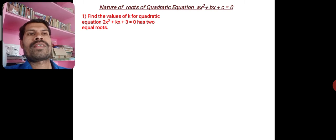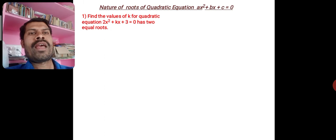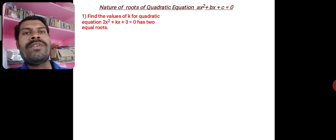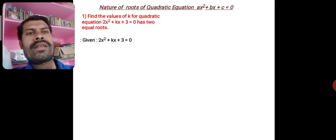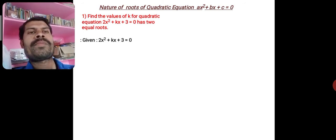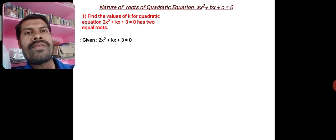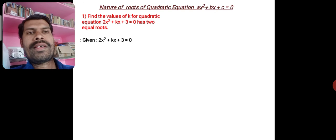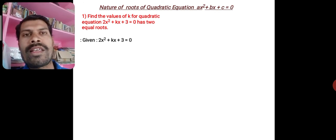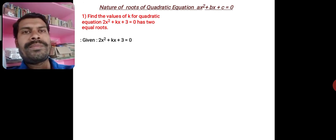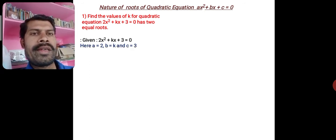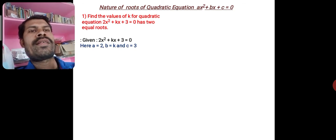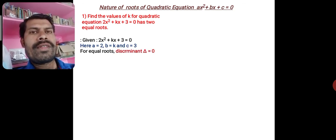Find the value of k for which the quadratic equation 2x² + kx + 3 = 0 has two equal roots. Given the equation is 2x² + kx + 3 = 0, we have to find the value of k. Here a = 2, b = k, c = 3. For equal roots, the condition is...